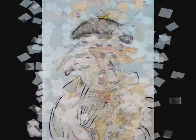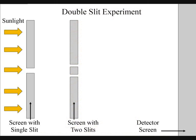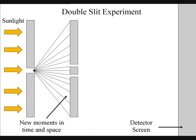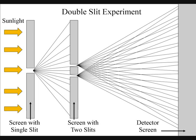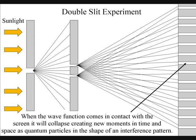The best way to see this happen directly with light is in the two-slit experiment. The light will expand in all possible directions as a wave-particle function. When it reaches the screen with the two slits, the photons will react with the electrons of the screen, collapsing the wave-particle duality of the light and creating new moments in time and new quantum particles in space. The part of the wave that does not come in contact with the screen will expand in all possible routes, going through both slits, and when this wave-particle function comes in contact with the screen, it will collapse, creating moments in time and quantum particles in the shape of an interference pattern.